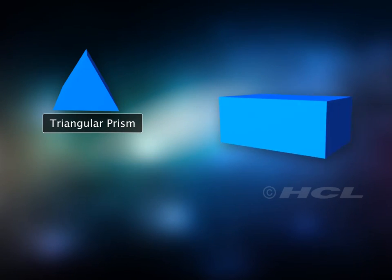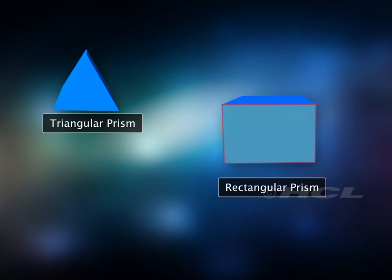Here is another prism. The ends of this prism are rectangles and so this is a rectangular prism. Notice that it is also called a cuboid.